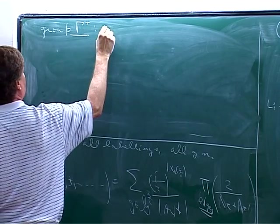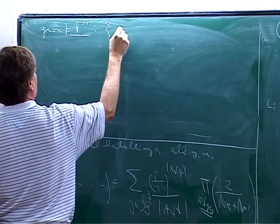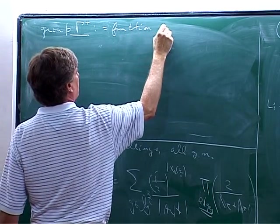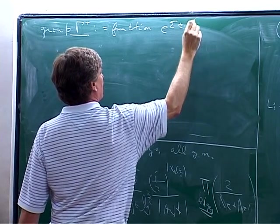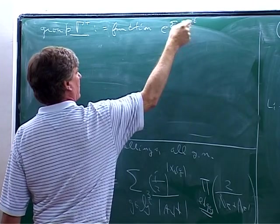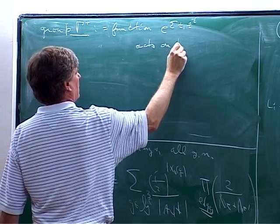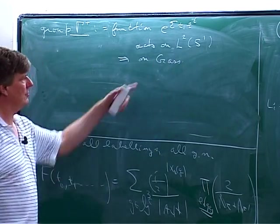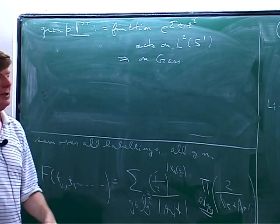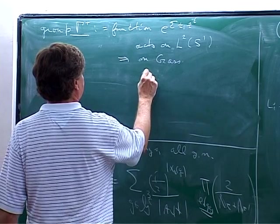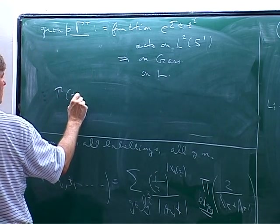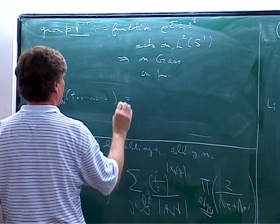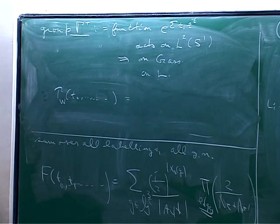The final element is a group which we call gamma plus which is just the group of functions, so it's an abelian group. E to the sum the parameters are TI Z to the I so it's in other words exponential of a series. Acts on L2 of the circle, implies on the Grassmannian also, and you're already seeing some complexity because you're acting on all the vectors at the same time. And you can define tau of tau 0, choose a plane, a base plane tau 0 tau N.